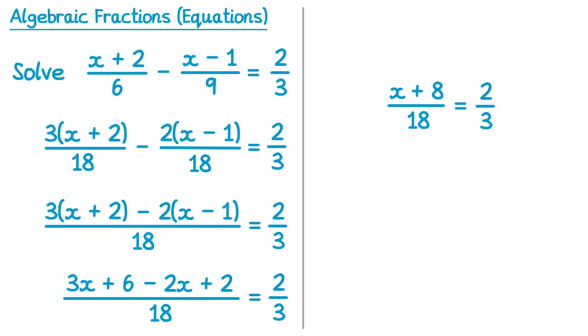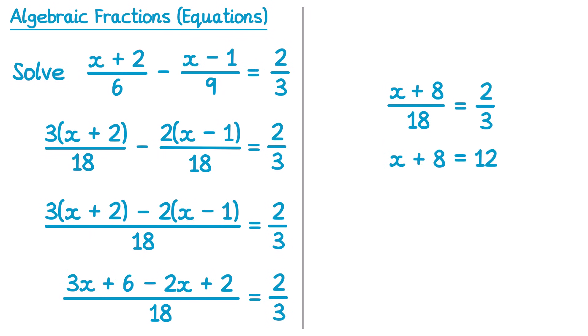The next thing I would do here is multiply both sides by 18. If we multiply by 18 on the left that will cancel the 18 that's there, so we just have x plus 8. And if you multiply the right hand side by 18, we've got 2 thirds multiplied by 18 — that's just the same as 2 thirds of 18, which is 12. Finally, if we subtract 8 from both sides, we end up with the answer x equals 4.